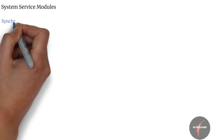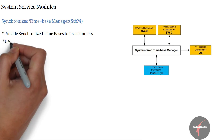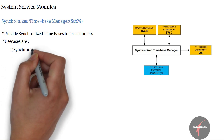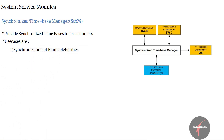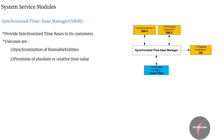Next we have the Synchronized Time-Based Manager. Its purpose is to provide synchronized time bases to its customers — that is, time bases synchronized with the time bases on other nodes of the distributed system. Two main use cases are: firstly, synchronization of runnable entities, ensuring all runnable entities connected with the system are executed synchronously; and secondly, provisioning of absolute and relative time values, providing a central module responsible for information about absolute time and passage of time.